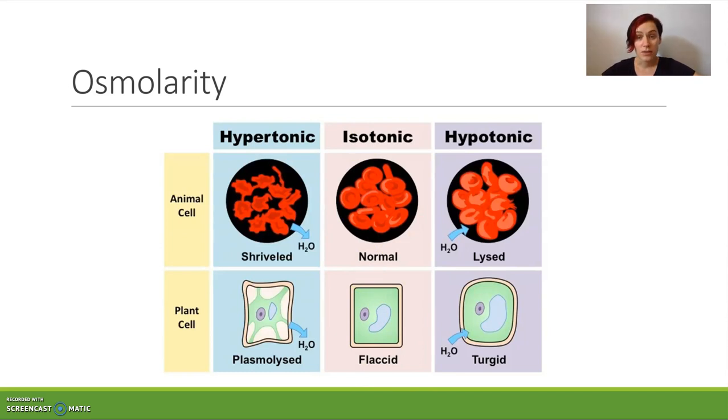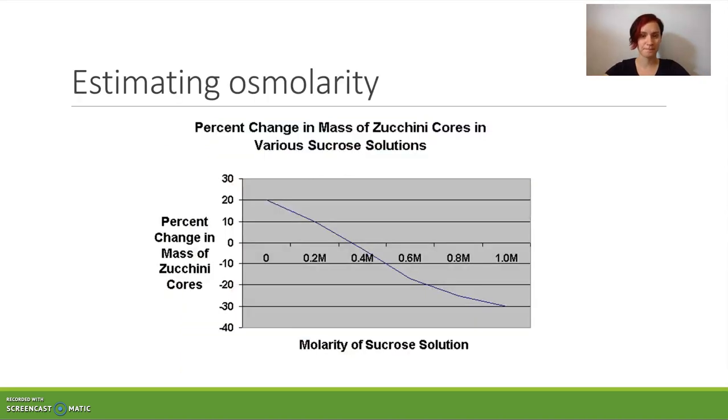Now, when organs are donated and transported, they are transported in an isotonic concentration so that the morphology, the shape of those cells is perfectly fine. If we are estimating osmolarity, then we are assuming it is at the point where there is 0% change in mass of whatever it is we are measuring. OK, so that's 0 point there.